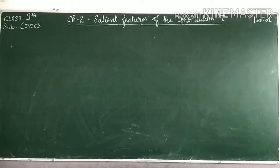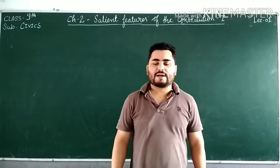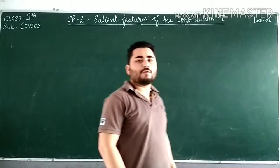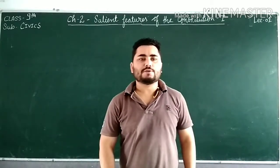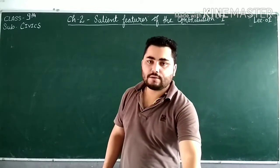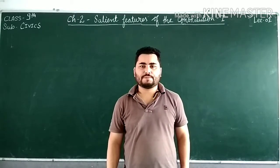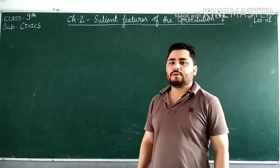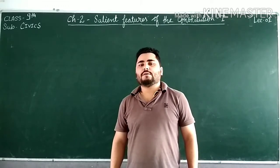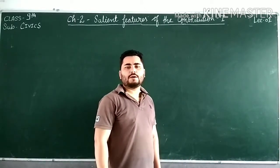Hello Class 9 students, greetings of the day. I, Muhammad Zeeshan, welcome you to the online classes of Blooming Birth Square School. Today we are going to study the second chapter of the civics book. The name of the chapter is 'Salient Features of the Constitution.' In the last chapter we studied what the constitution is, its need, a brief history of constitution making, and the drafting committee. In this lecture we are going to study some of the features of our constitution.